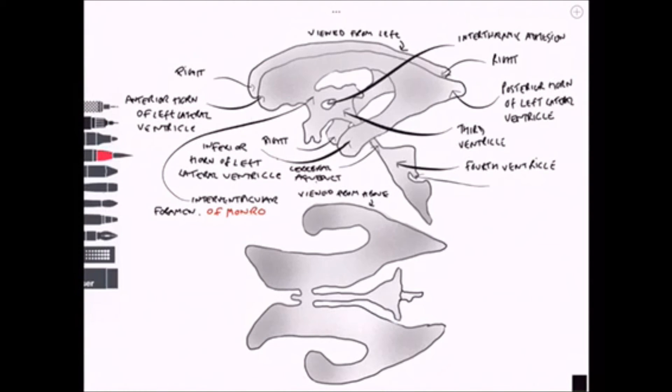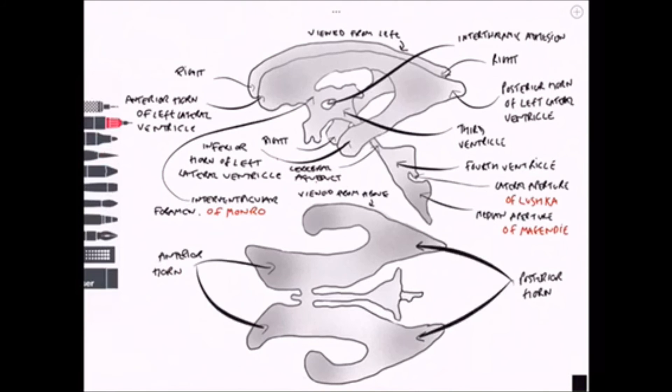What we want to do now is focus a little bit on the apertures that allow CSF to travel out of the ventricles and into the subarachnoid space. We can do this by looking at the diagram at the bottom of this image.